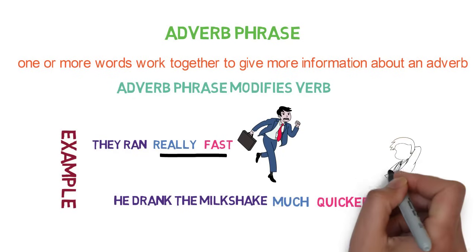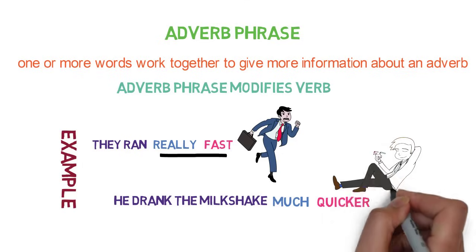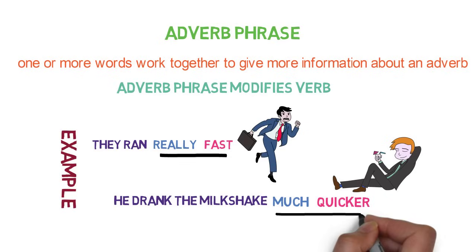Another example: 'we drank the milkshake much quicker' — here 'quicker' is an adverb and 'much' is just describing the word 'quicker,' so 'much quicker' is an adverb phrase.